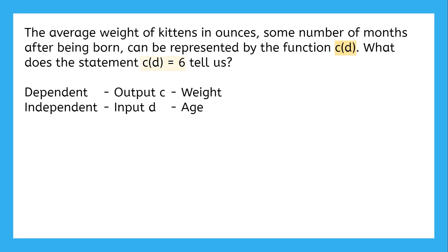Now that we know which variable is which, we can decipher c of d equals 6. This tells us that when the kitten is d months old, it will weigh 6 ounces. The d months old part is because we don't actually know what the value of d is, just that the weight associated with that age will be 6 ounces.